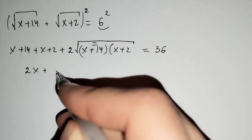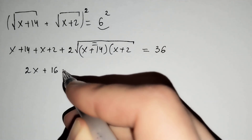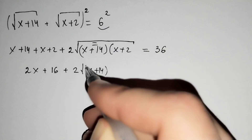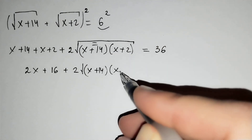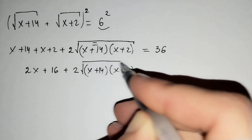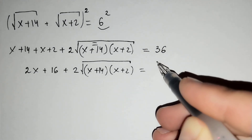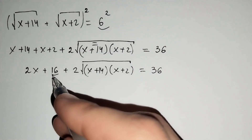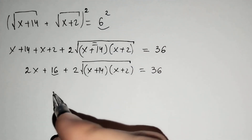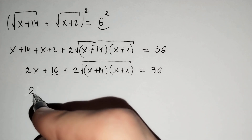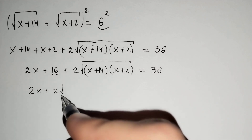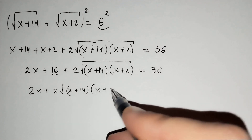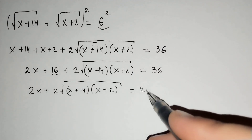This gives us 2x plus 16 plus 2 times the square root of (x plus 14)(x plus 2) equals 36. Now let's move 16 to the other side of the equation: 2x plus 2 times the square root of (x plus 14)(x plus 2) equals 20.